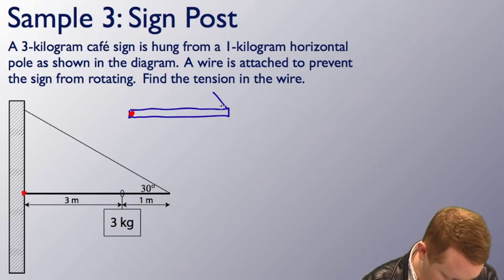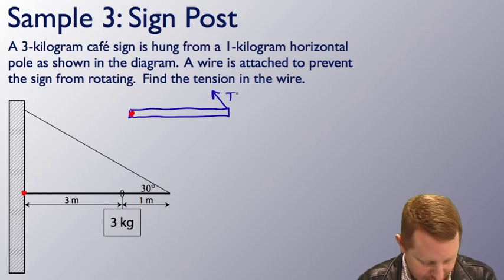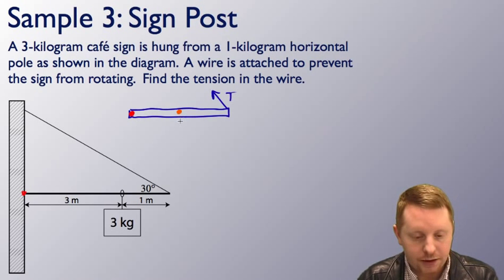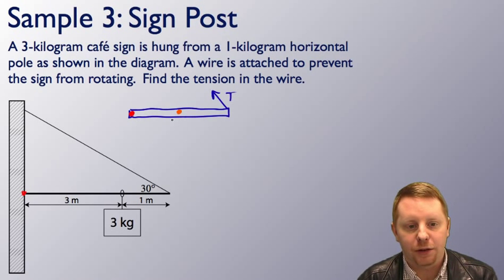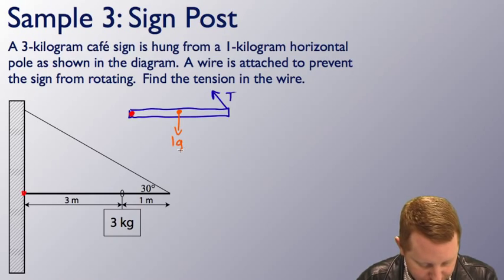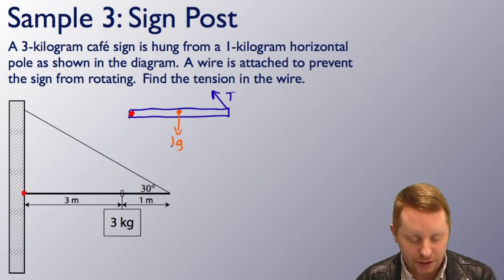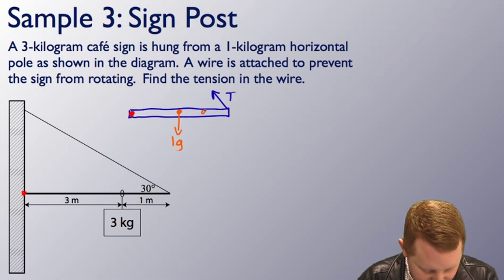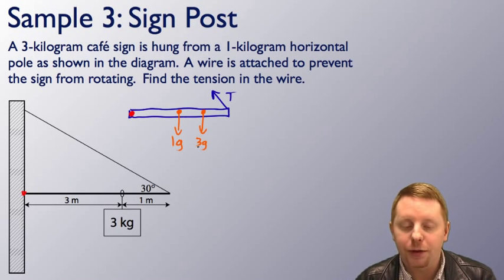We have the tension in the wire, T. We have the mass of the pole, which is going to be 1 kilogram times the acceleration due to gravity. The force will be mg, its weight. So that's in the middle of the pole. That's going to be 1 kilogram times g, 10 meters per second squared, which is 10 newtons. And we also have this 3 kilogram weight that's acting over here. So that'll be 3 times g, or 30 newtons.